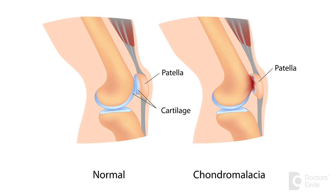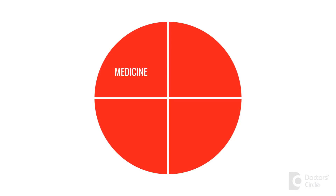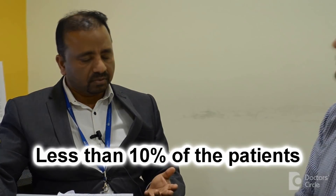It implies that there's increased friction between the kneecap cartilage and the thigh bone cartilage. The complex terminology for this condition is referred to as chondromalacia patella. The good news is that this condition responds very well to non-operative simple treatment consisting of medicine, physiotherapy, exercises and certain precautions, and only needs surgery in patients who fail to respond to non-operative treatment.